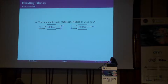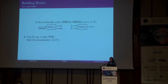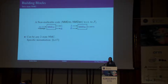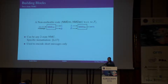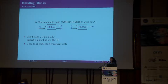The third building block is any two-state non-malleable code. When I say any, it means any rate — you do not need an optimal rate here. For the specific instantiation to achieve rate one half, we use Li's inverse logarithmic rate two-state code. Because we are using a poor rate non-malleable code, to save on overall rate we can only use this code to encode short messages.